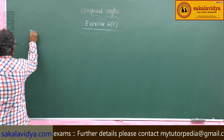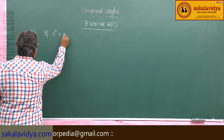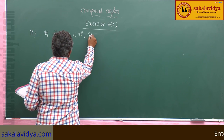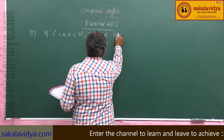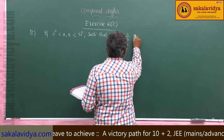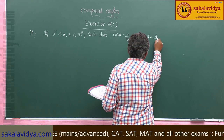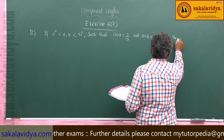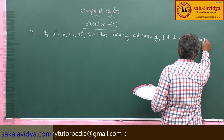Second problem: if 0 degrees is less than a and b less than 90 degrees, and cos a equals 5 by 13 and sin b equals 4 by 5, find the value of sin of a minus b.